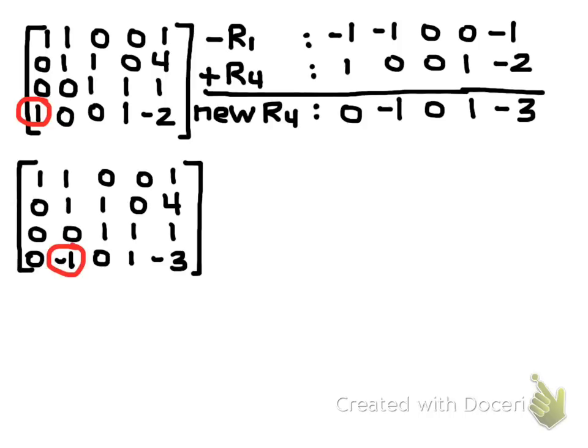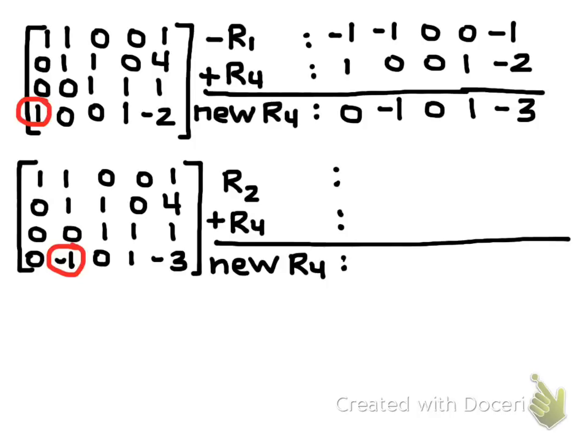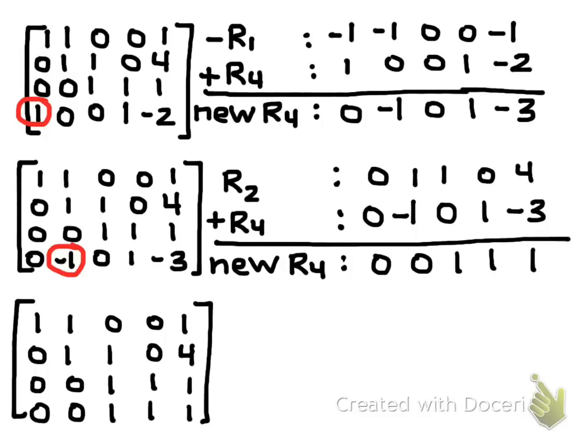Next, I want to get a zero below the next leading 1. So I want to zero out this negative 1. In order to do that, I want to use row 2 plus row 4. I do not want to use row 1, because that would introduce a 1 in the first column of row 4, and I don't want to put that back. So I'll do row 2 plus row 4 gives me the new row 4 by adding up the corresponding entries, and I get my new matrix.